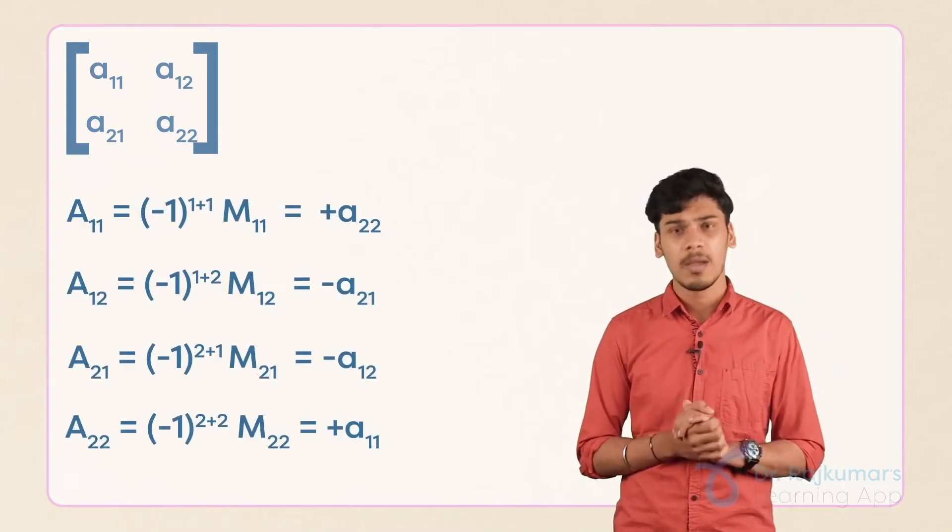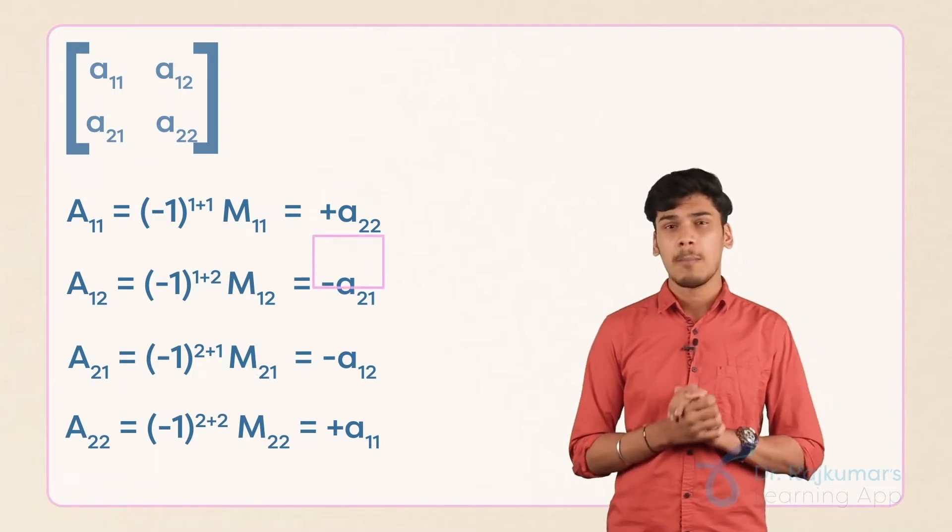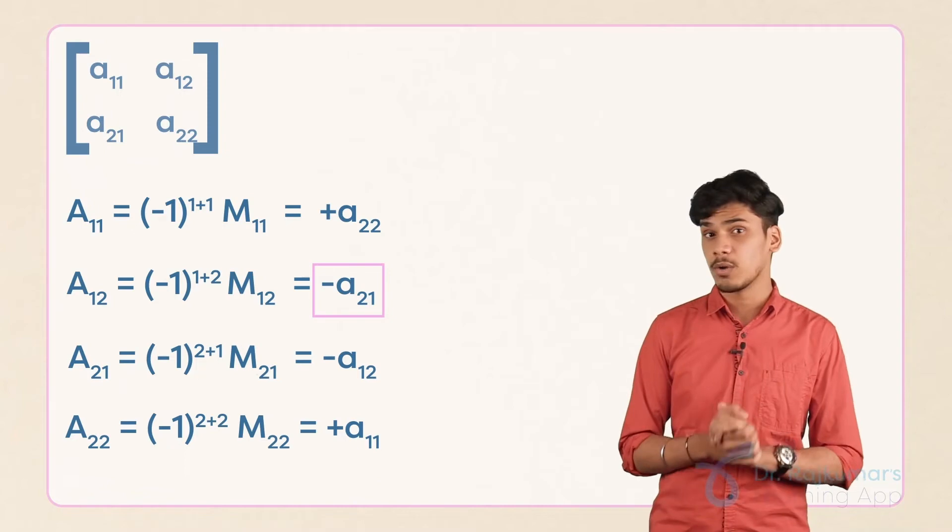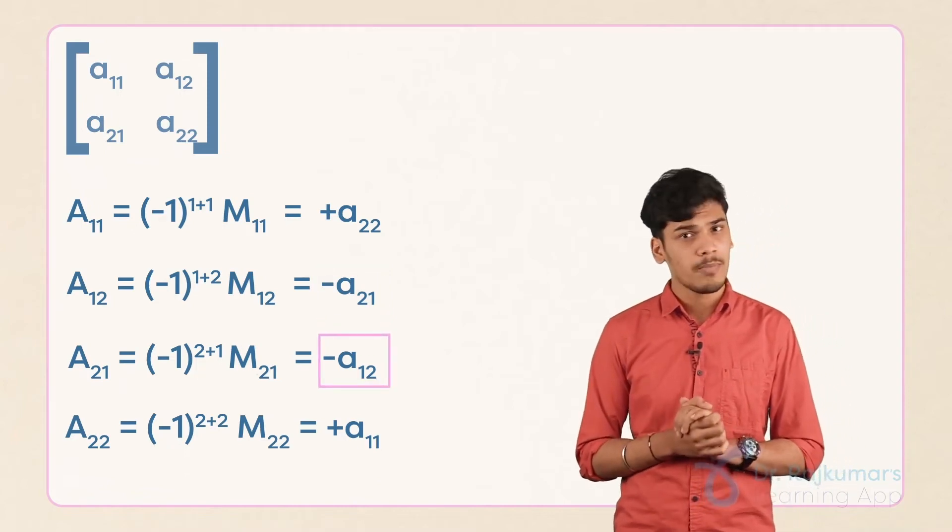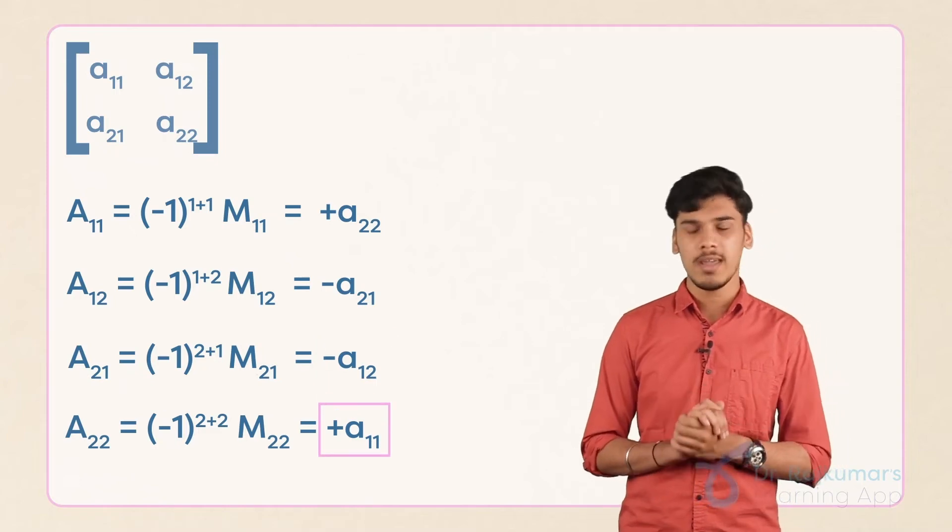Capital A11 is equal to plus A22. Capital A12 is equal to minus small a21. Capital A21 is equal to minus small a12 and finally capital A22 is equal to plus small a11.